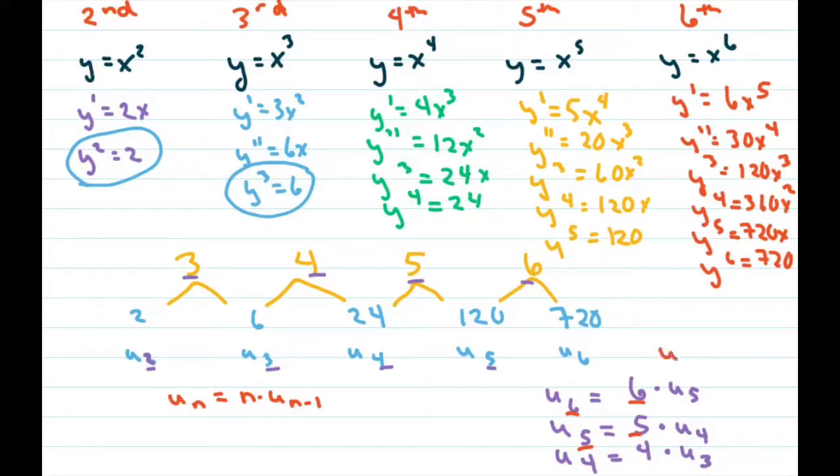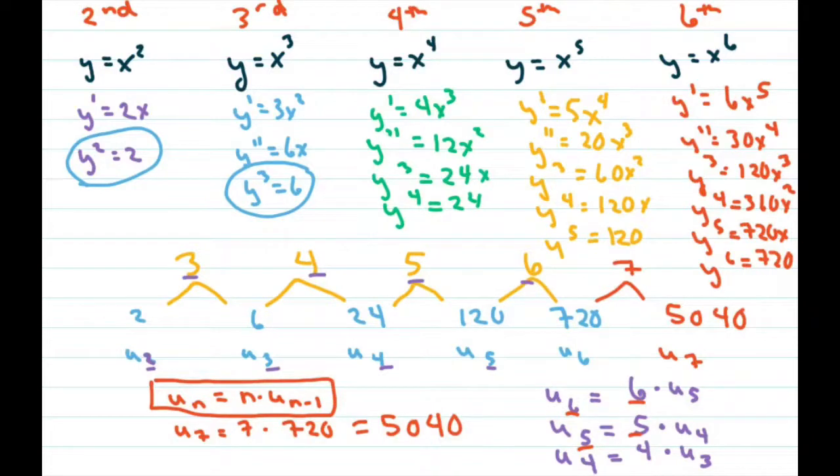So if you wanted to find u sub 7, that would be u sub 7 equals 7 times 720. And 7 times 720 equals 5,040. So that would be like this. And this would be 5,040. And that way you don't have to go through all this all the time. So now you have your formula for the nth derivative. That's all. Thank you. Have a nice day. Bye-bye.